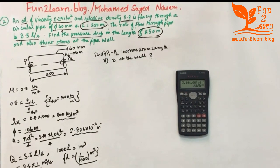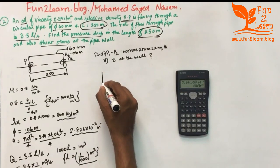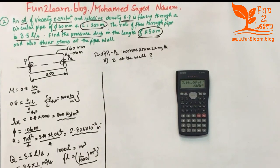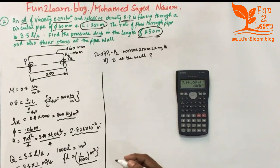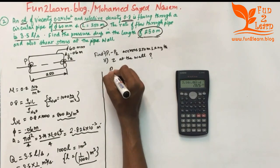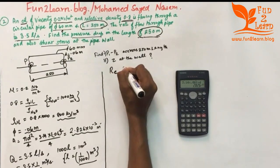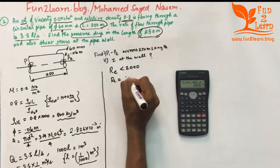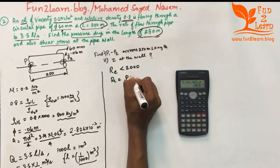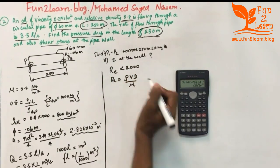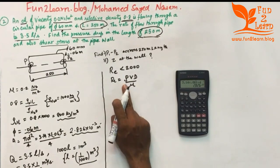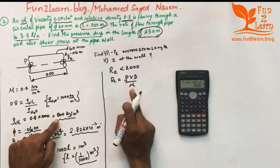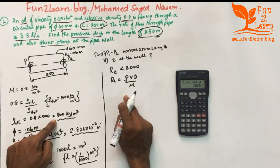We will use the Hagen-Poiseuille equation, which applies to laminar flow. First, we verify the Reynolds number: Re = ρVd/μ. We will use the fluid density of 800 kg per meter cube. We know the diameter and μ, and we need the average velocity.